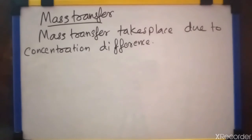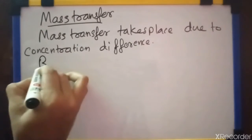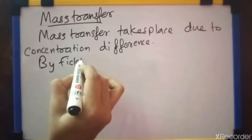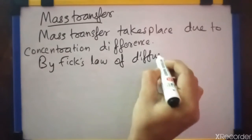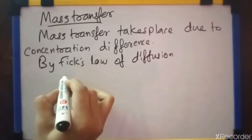for the transfer of mass from one region to another, there must be a concentration difference between these two regions. These two regions means there is no necessary to be two regions, these two may be gases, liquids, etc. By Fick's law of diffusion,